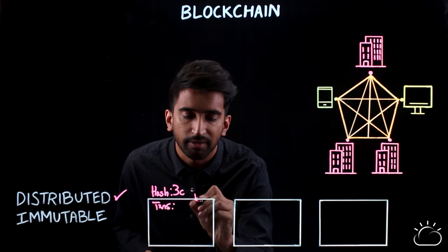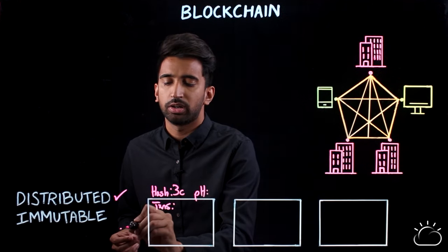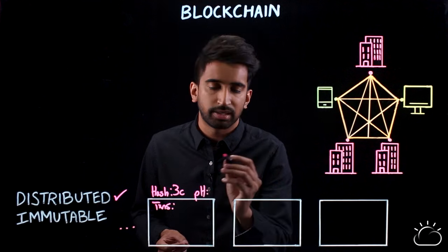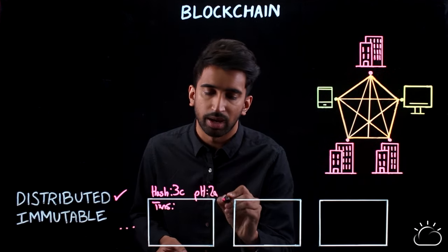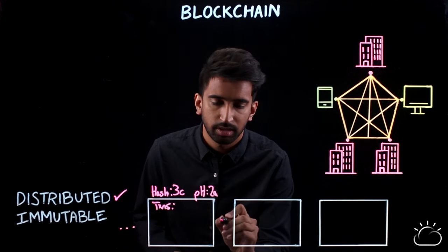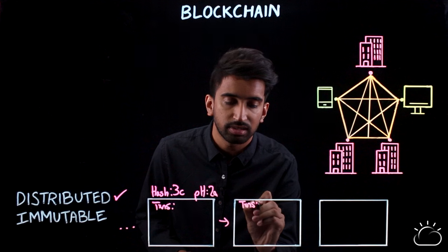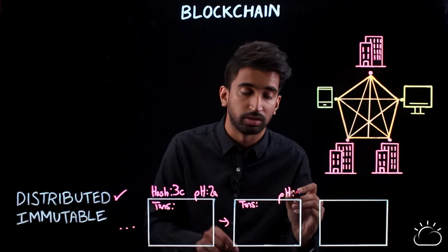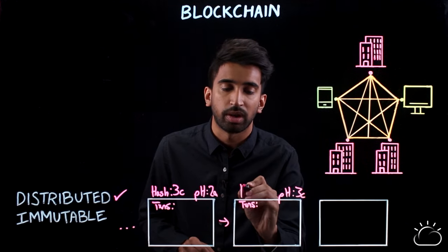A block is also going to have the hash of the previous block in the chain. So let's say we're right in the middle of a blockchain, and we'll pick something for the previous hash — say maybe '2a'. The next block is going to have its own set of transactions, as well as the previous hash which corresponds to the prior block, as well as its own hash.